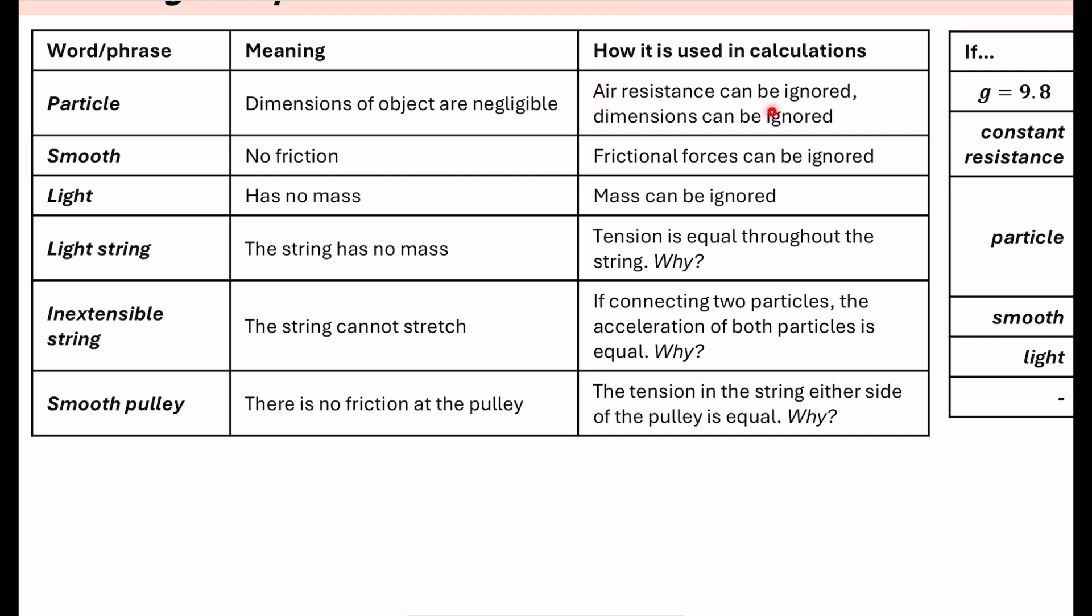So how is it used in calculations? Well, it means that the air resistance can be ignored. If something has got no dimensions, the air is not going to resist its motion. It also means that its dimensions can be ignored. So if we were talking about like a box sliding down a plane, we don't need to care how big the box is. We're just imagining that all of its mass is concentrated at a single point. And I should also mention that as well as air resistance being ignored, then we can also ignore how it might be spinning around in the air as well, how it might be rotating.